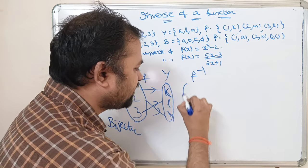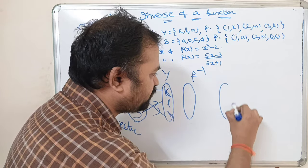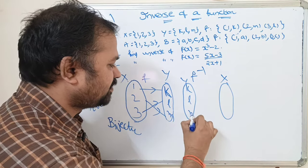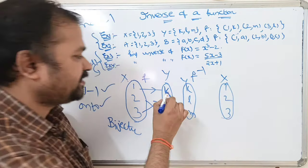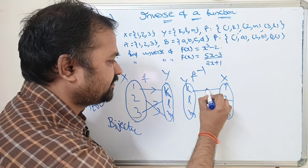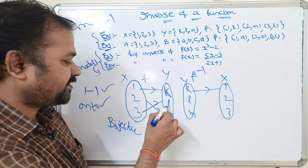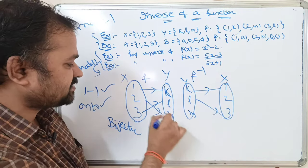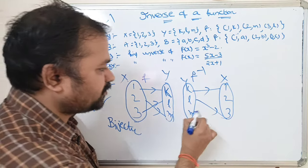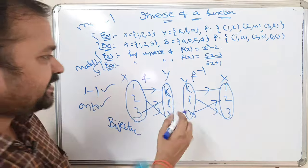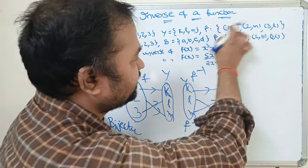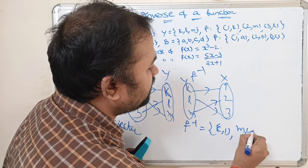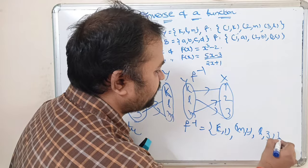Since it is a bijective function we can calculate the inverse. f inverse maps from B to A, meaning from Y to X. For k the mapping is 1, for l the mapping is 3, for m the mapping is 2. So f inverse consists of the reversed ordered pairs: f inverse = {(k,1), (l,3), (m,2)}.